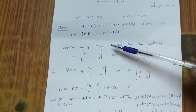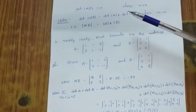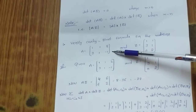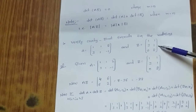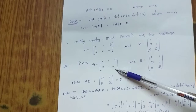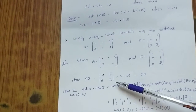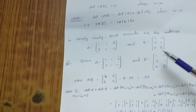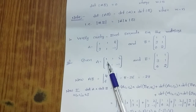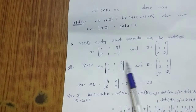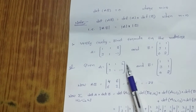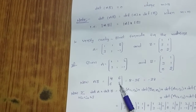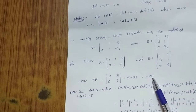Now another example: verify the Cauchy-Binet formula for rectangular matrices. A = [1 1 2; 3 1 −1] with order 2 by 3, and B is a 3 by 2 matrix with B = [1 2; 3 3; ... ]. First, find the product AB. Computing the first row, first column: 1×1 + 3×1 = 3+1 = 4, and continuing we get AB = [4 6; 6 2]. The determinant of AB = −28.